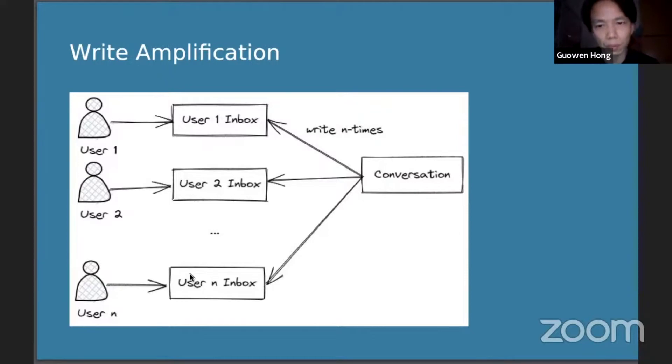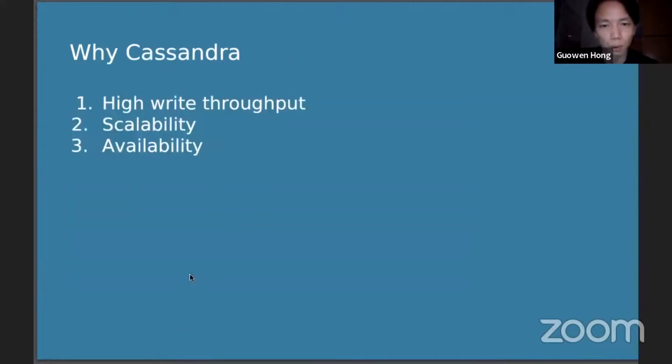From the perspective of the conversation, as the diagram shows, every message sent to the conversation will be pushed to all members' inboxes. It means that the write operation will be amplified by n times, and n stands for the number of conversational members. It might be large. And then the write amplification becomes a new challenge we have to overcome.